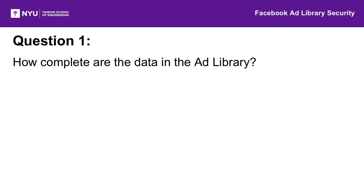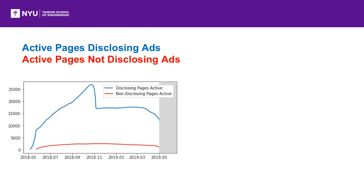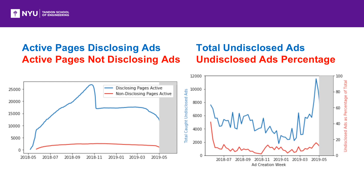For the first question — how complete are the data? — a more specific version is: how good are advertisers at disclosing ads that meet the criteria for inclusion? We can start by looking at the number of pages with active political ads in a given week who are disclosing their ads and those who are not. While disclosing pages with active political ads follow an expected pattern of peaking right before an election and then falling back down, pages running undisclosed ads remain at a relatively steady level over the entire study period. After the first month, there is no upward or downward trend in the number of undisclosed ads — they're just ticking along at a constant rate.